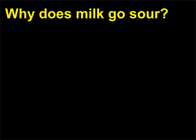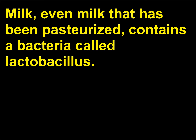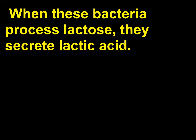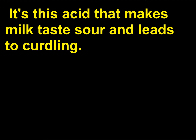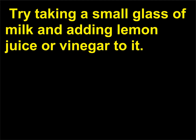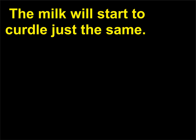Why does milk go sour? Milk, even milk that has been pasteurized, contains a bacteria called lactobacillus. The first part of the word, 'lacto,' refers to the sugar that these particular bacteria eat: lactose. When these bacteria process lactose, they secrete lactic acid. It's this acid that makes milk taste sour and leads to curdling. It actually doesn't have to be lactic acid that curdles milk — any acid will do. Try taking a small glass of milk and adding lemon juice or vinegar to it; the milk will start to curdle just the same.